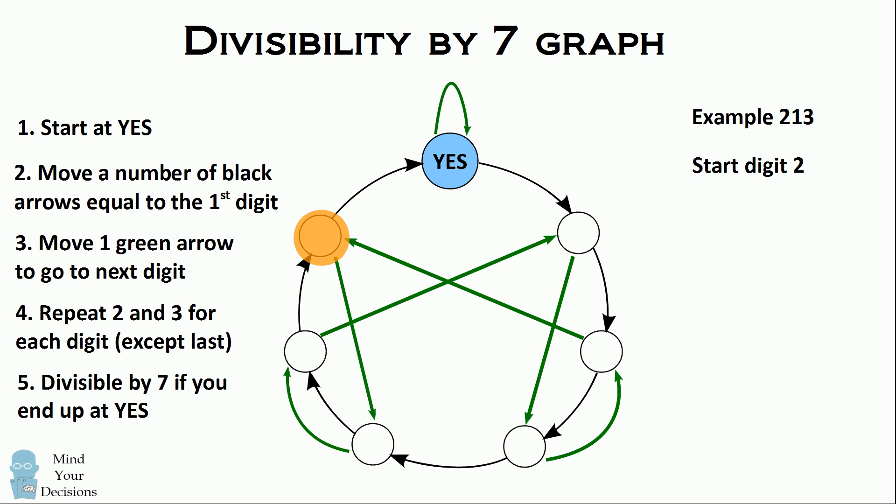We then move one green arrow before we get to the next digit of one. For the digit of one, we move one black arrow and then we move one green arrow. In this case, the one green arrow brings us back to the same spot. We finally consider the last digit of three and we move three black arrows, which brings us to this circle.